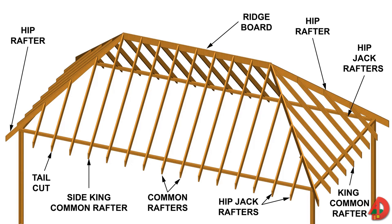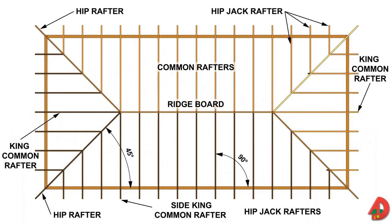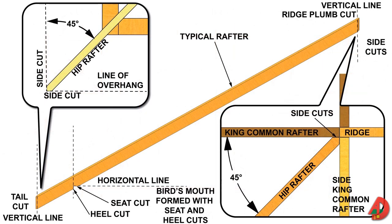A hip roof has four sloping sides. Four hip rafters run at a 45-degree angle on plan view from the corners of the building to the ridge board. Hip jack rafters frame the space between the hip rafters and the tops of the exterior walls. Common rafters for hip roofs extend from the ridge board to the wall plates, similar to gable roofs. The king common rafter extends from the ends of the ridge board to the top plate. Hip rafters are longer than common rafters, with a higher unit run. In addition to plumb cuts at the ridge, heel, and tail, a hip rafter requires side cuts where it meets the ridge.